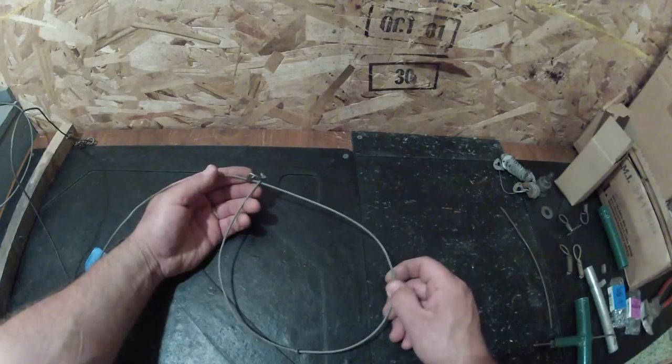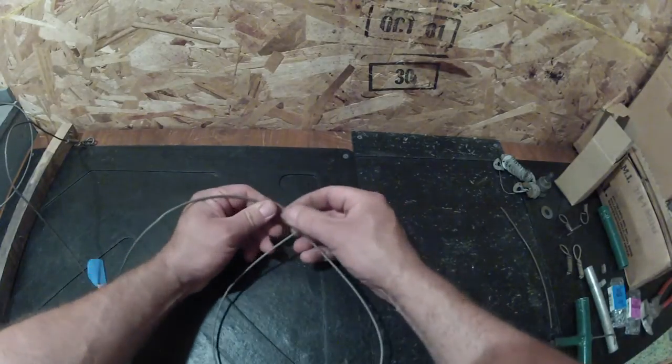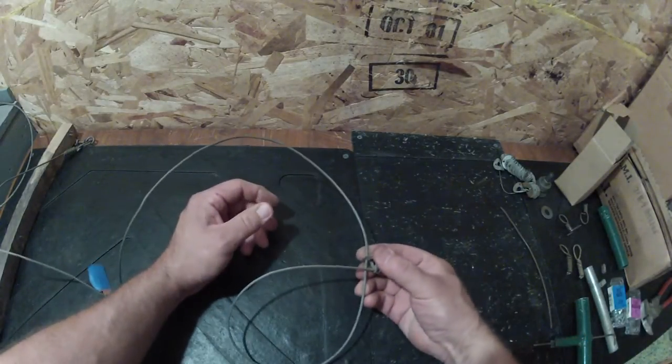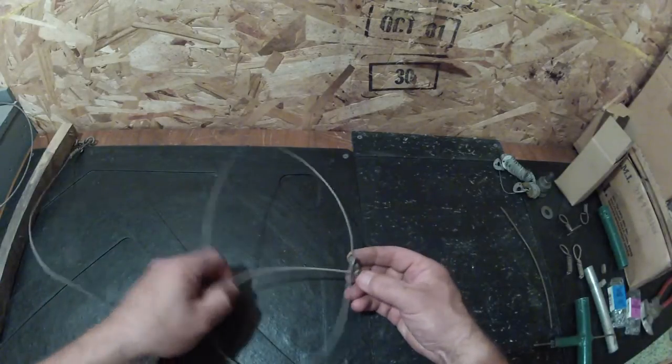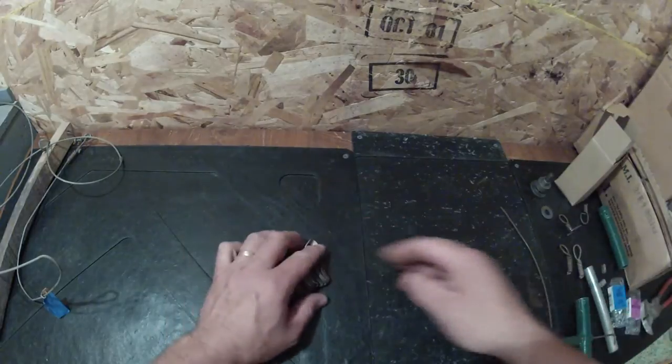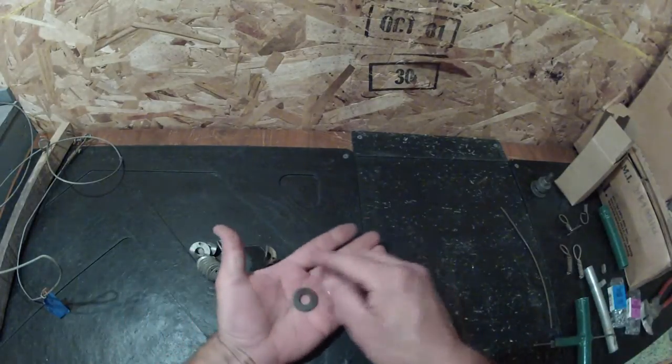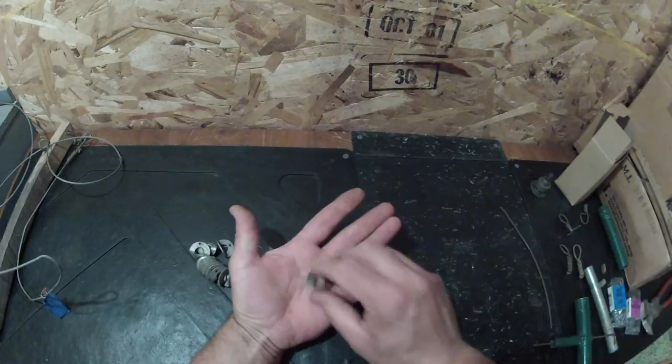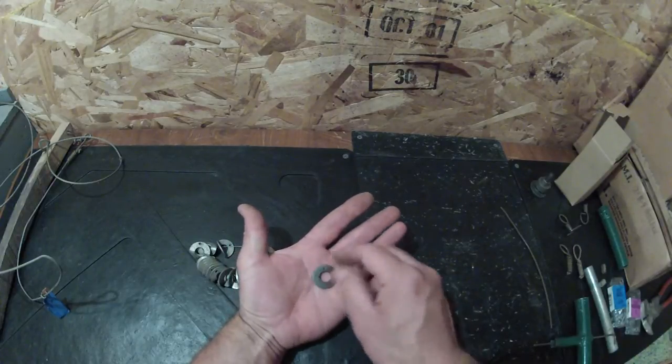To make these snares is pretty easy, pretty cheap. A lot cheaper the more cable you buy. The lock itself is nothing but a washer, just a plain old steel washer.